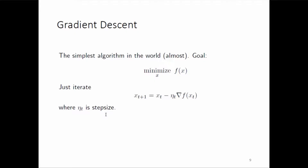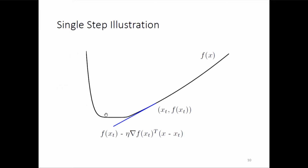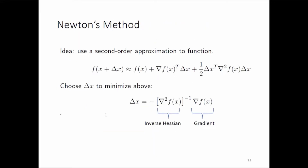You also know about gradient descent — you basically take a step in the negative gradient direction because that is the steepest descent direction.